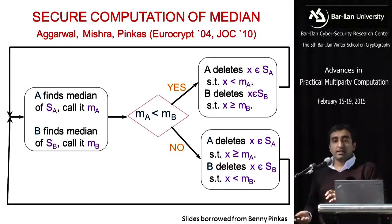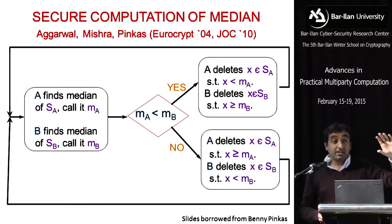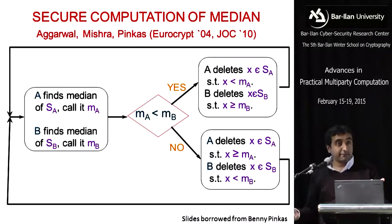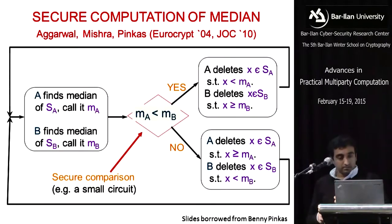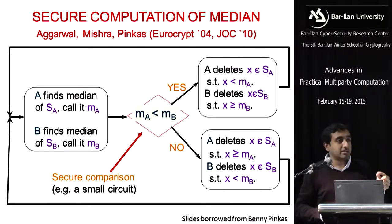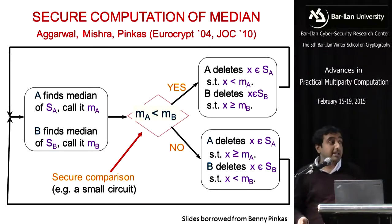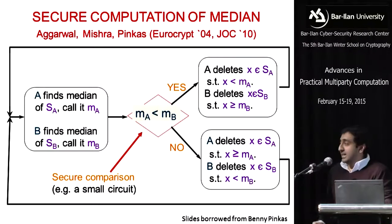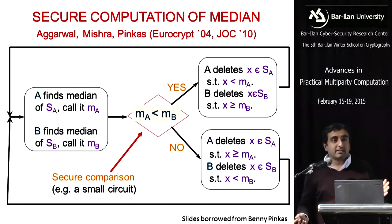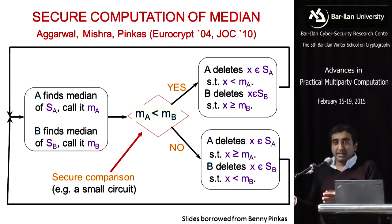This beautiful approach actually computes the median. The number of rounds of iteration is log n because you decrease by half. The communication complexity, because if you look at what is being securely computed it's just a comparison operator — just the classic Yao's millionaire — the communication complexity of this actually approaches the communication complexity of computing the median itself. I think this is a sort of an outlier in this space of how we construct secure computation, but it's a really fantastic piece of work.